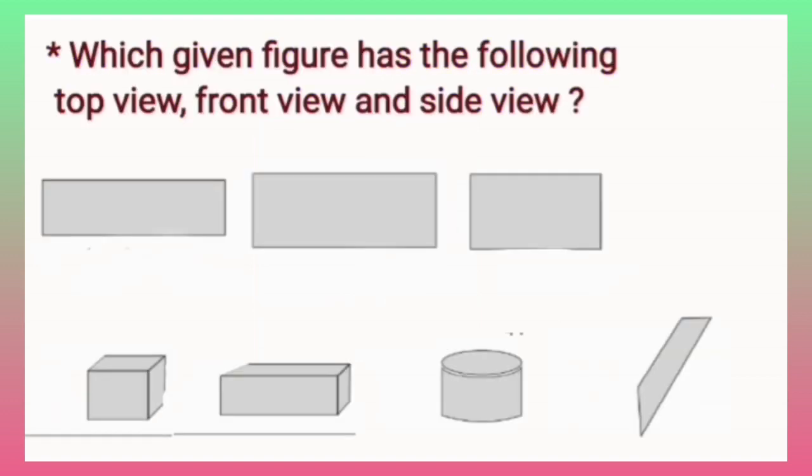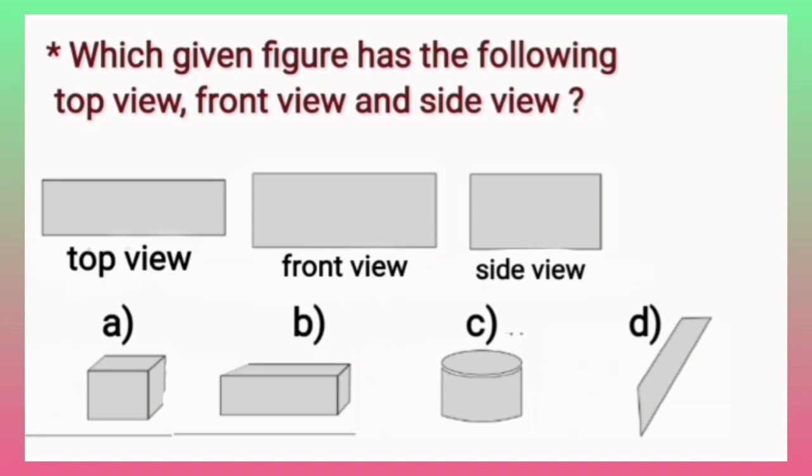Now the next question is which given figure has the following top view, front view and side view? Children, look at these views carefully. These all are in rectangular shape and in the given options, which figure has these three views? That means rectangular views. So children, let's start to find the correct option from the given options.